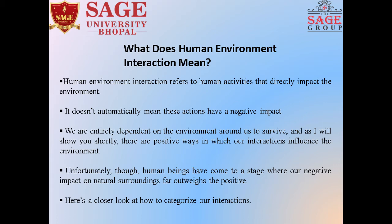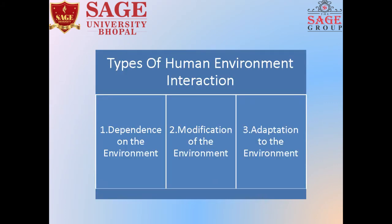Unfortunately, human beings have come to a stage where our negative impact on natural surroundings far outweighs the positive. Let us see the three types of human-environment interactions: number one, dependence on the environment; number two, modifications of the environment; number three, adaptations to the environment.